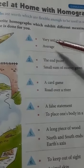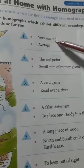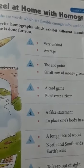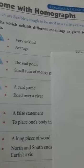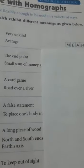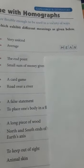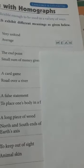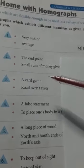The first example is 'very unkind' or 'average.' The person is very unkind. The homograph word for these two meanings — very unkind and average — is 'mean.'